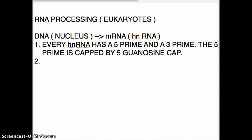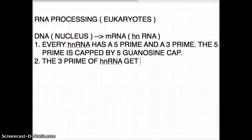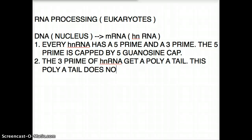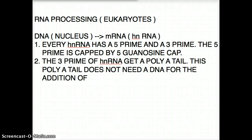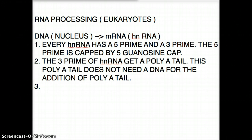The second thing that happens is that the three prime end of the hnRNA gets a poly-A tail. So it has many A's at the very end of the three prime, and this poly-A tail does not need a DNA template for its addition. So: first, the five prime guanosine cap comes and sits on the five prime of the heteronuclear RNA; then the three prime gets the poly-A tail.